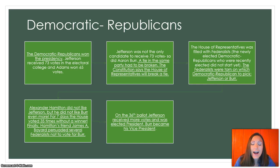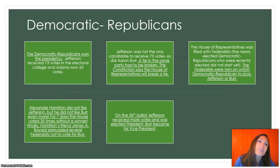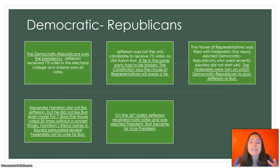When they did the tiebreaker, they voted, and still a tie. So they had to vote again — still another tie between Jefferson and Burr. Take another vote, still a tie. This went on and on; they kept doing these tiebreakers, but no one won.